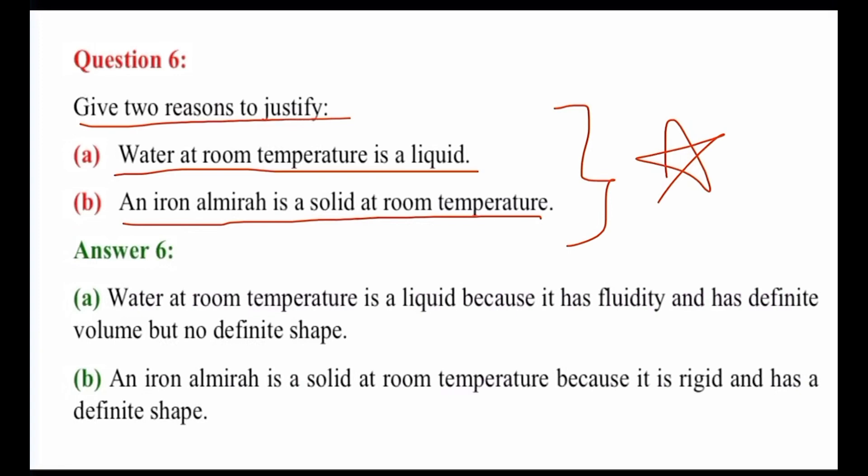You have to state two reasons for this, that is you have to justify why water at room temperature is in a liquid state. Water at room temperature is a liquid because it has fluidity and has definite volume but no definite shape. Water at room temperature is in a liquid state. It is actually very simple because it is between 0 degrees Celsius and 100 degrees Celsius.